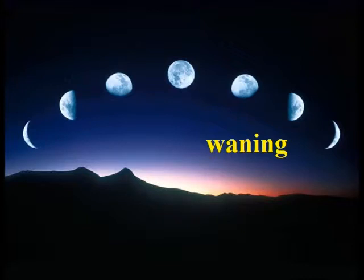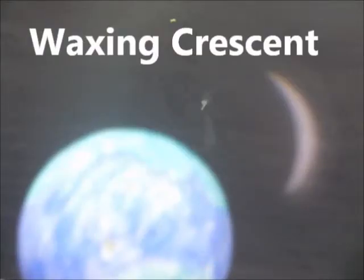The very first phase of the lunar cycle is the new moon. This is when we cannot see any light being reflected off the moon at all. The second phase is the waxing crescent, where the lit up part of the moon begins to grow and we see less than a half of one side of the moon illuminated.